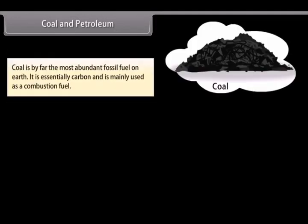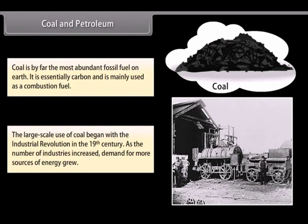Coal is by far the most abundant fossil fuel on earth. It is essentially carbon and is mainly used as combustion fuel. The large-scale use of coal began with the industrial revolution in the 19th century. As the number of industries increased, demand for most sources of energy grew.